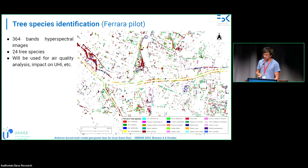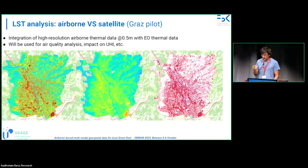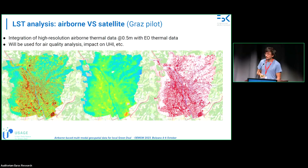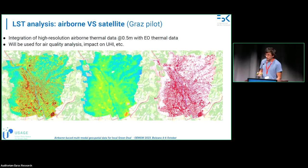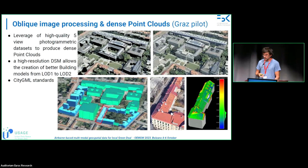Briefly on Graz: thermal images are available at half a meter resolution. Since we are at an Earth Observation workshop, here is a comparison with a Landsat acquisition over the city just three days apart. Landsat can capture the major trends over the city but cannot provide the granularity or street-level resolution. However, the major heat spots within the Graz city are picked up by Landsat. On the right is the difference map for a quick comparison.